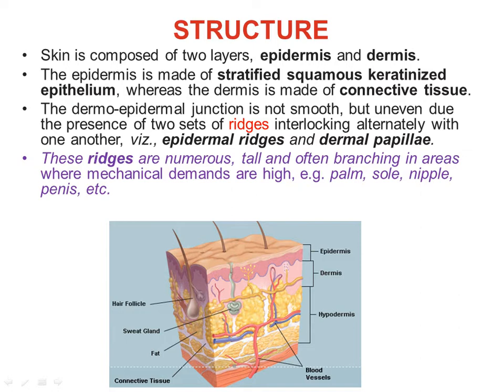The dermis is made up of connective tissue. The dermo-epidermal junction is not smooth but uneven — as seen in this picture showing a wavy pattern. This is due to two interlocking structures: epidermal ridges and dermal papillae. These ridges are numerous, tall, and often branching in areas of high mechanical demand such as the palm, sole, nipple, and penis.